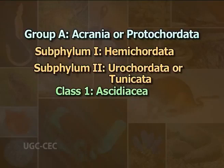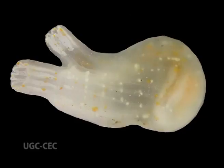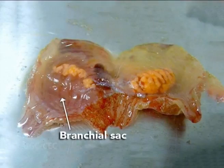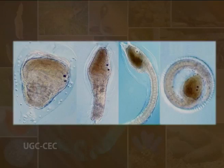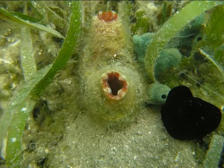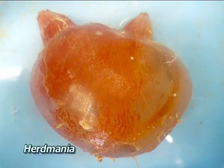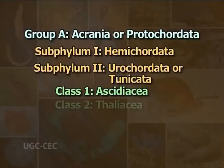Development is indirect with tadpole larva having chordate characters. This sub-phylum has three classes. Class 1: Ascidiacea. The animals of this class are solitary, colonial or compound forms. They are all sessile sea squirts or ascidians. Branchial sac is large and well developed. Larva is free-swimming and highly developed and undergoes retrogressive metamorphosis. Most are fixed directly to the substratum, but a few have long stalks. Examples include Herdmania, Ciona and Molgula.